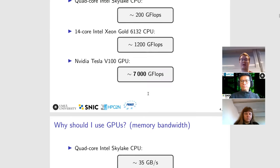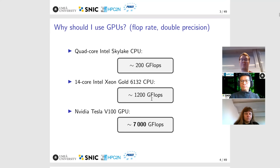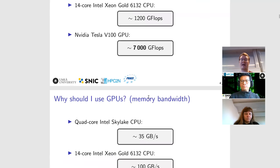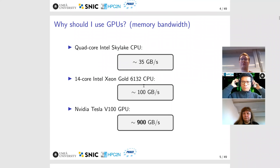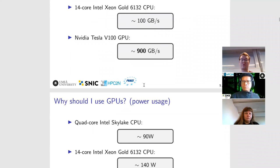So in both terms of raw compute performance and memory bandwidth, the GPU is clearly — at least on paper — much more powerful than the CPU.